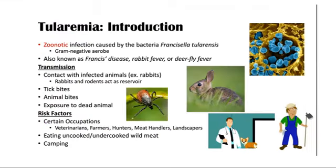Here is some introduction of this topic. Tularemia is a zoonotic infection caused by Francisella tularensis, which is a gram-negative aerobic bacteria. This condition of tularemia is also known as Francis disease, rabbit fever, or deer-fly fever, among other names.